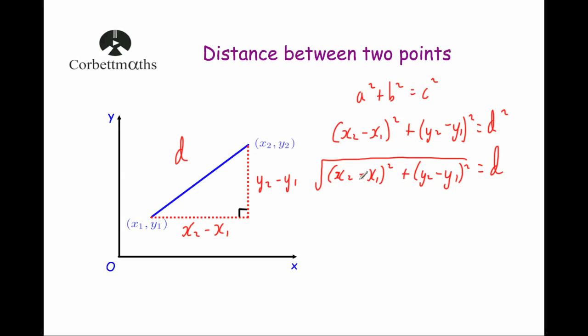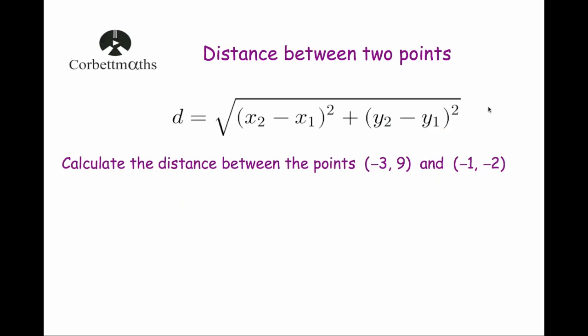So this is the formula to work out the distance between two points. Let's have a look at it typed out: the distance d is equal to the square root of x2 minus x1 squared plus y2 minus y1 squared. And that's it.